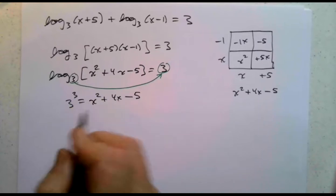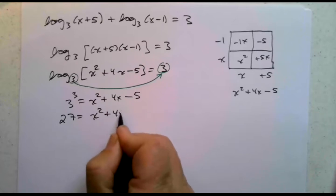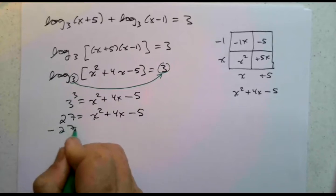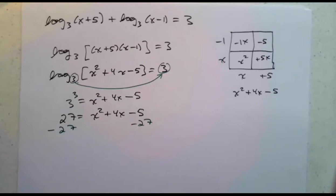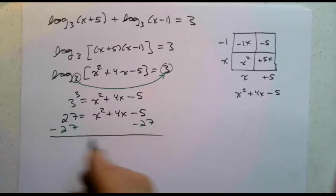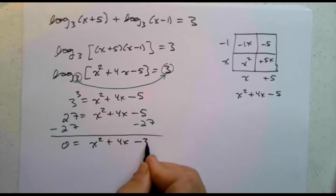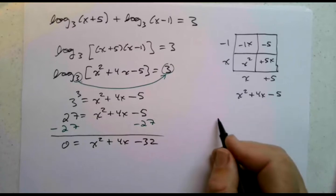So 3 to the third power is 27 equals x squared plus 4x minus 5. Let's subtract 27 from both sides. So we get 0 equals x squared plus 4x minus 32, and that is going to be required to be factored.